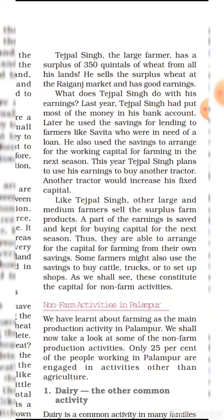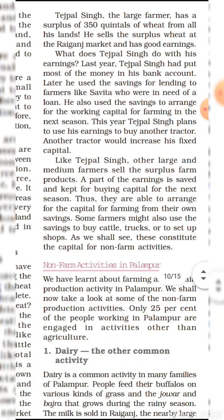Tejpal Singh, the large farmer, has a surplus of 350 quintals of wheat from all his land. He sells the surplus wheat at the Raiganj market and has good earnings. Last year, Tejpal Singh put most of the money in his bank account. Later, he used the savings for lending to farmers like Sabitha who were in need of a loan. He also used the savings to arrange working capital for farming in the next season.